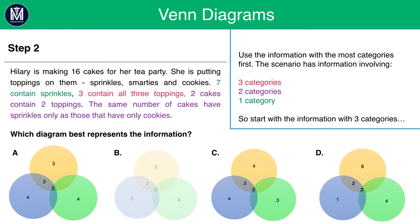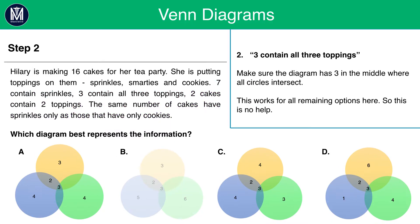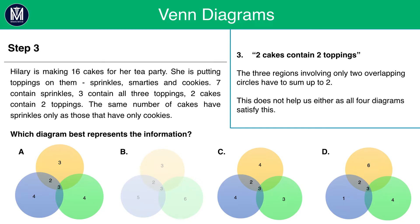So let's start with the piece of information in red about 3 categories. We see 3 contain all 3 toppings. Now, look at A, C and D and make sure all 3 have a 3 in the middle where all the circles intersect. Unfortunately for us, all 3 do have 3 in the middle. That means we have to carry on and look at the next clue. The next clue will be about 2 toppings. We see that 2 cakes contain 2 toppings. Unfortunately for us, it doesn't help us here either. Because we see that in between 2 circles, for A, there is a 2. For C, there is a 2. And for D, there is also a 2.